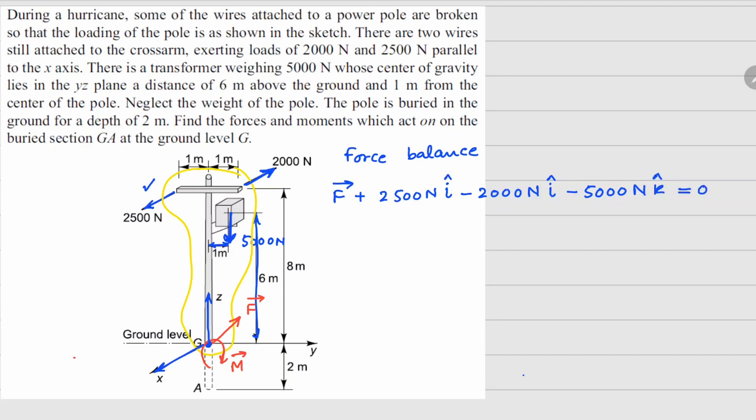So all these forces need to be summed up to zero. So from this we can figure out the net force at ground G is going to be, if I add these two it becomes 500. So minus 500 i cap plus 5000 k cap newtons.